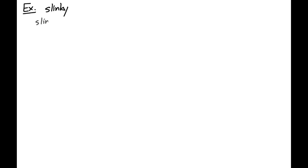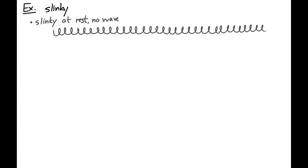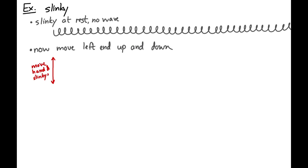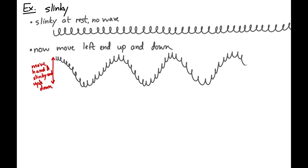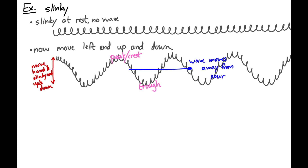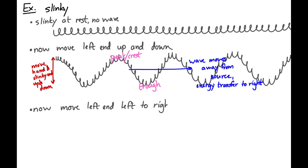I'll draw a slinky in its equilibrium state. Now imagine that on the left side of the slinky I take my hand and move it up and down. I'm the source, and the wave that travels through the slinky would have parts up and parts down — peaks (crests) and troughs — and the wave moves to the right, away from the disturbance. This looks like a classic wave, kind of what you expect.